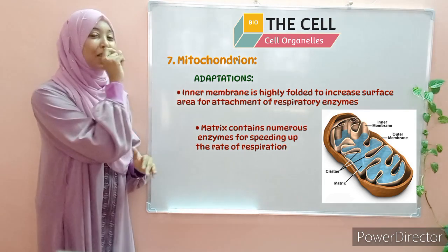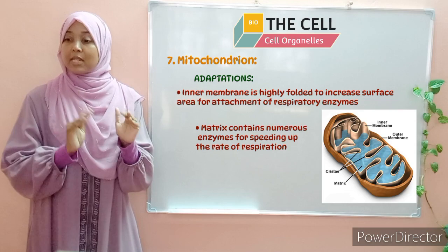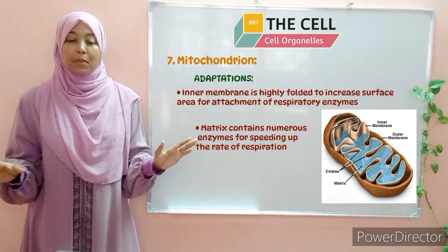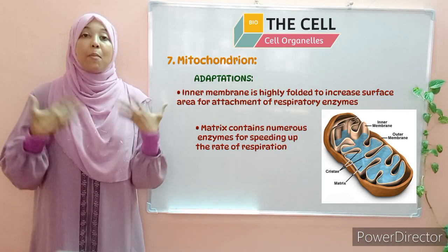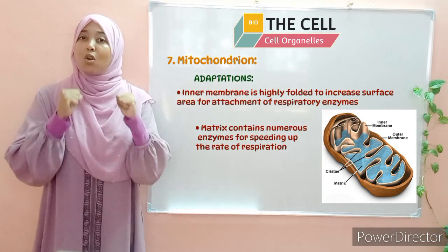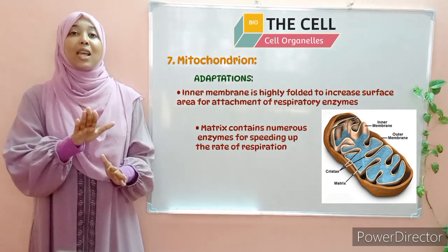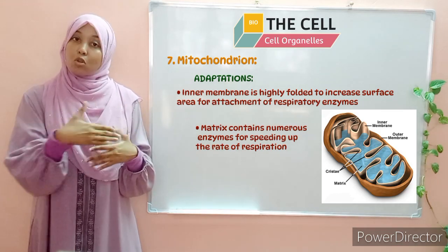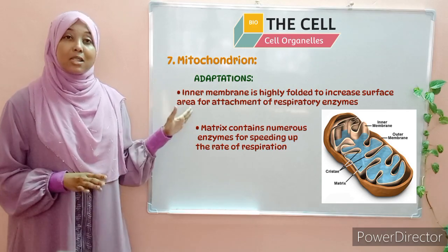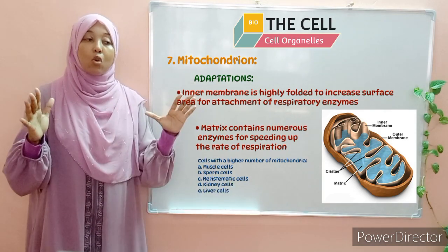I have forgotten one last point regarding the mitochondria. Within cells, all cells have mitochondria, but the number of mitochondria present differs from one cell to another. The reason is that different cells have different energy requirements. Some cells carry out a lot of processes that require more energy than others. For example, muscle cells are required to contract and relax in order to bring about movement, so they require a lot of energy and therefore have a higher number of mitochondria. Another example is the sperm cell, which needs a lot of energy to propel it towards the egg cell for fertilization. So cells with a higher energy requirement — like sperm cells, muscle cells, meristematic cells, kidney cells, and liver cells — have more mitochondria than others.